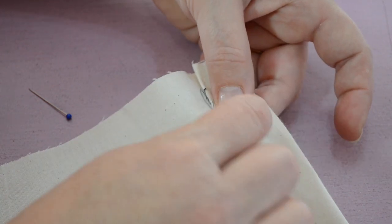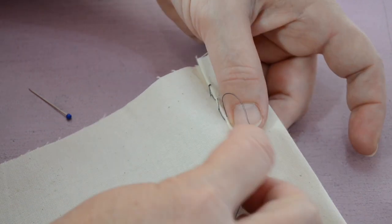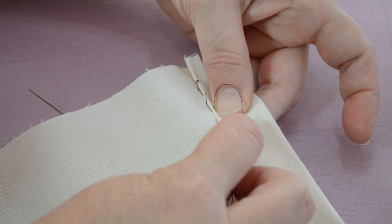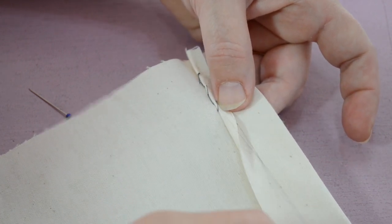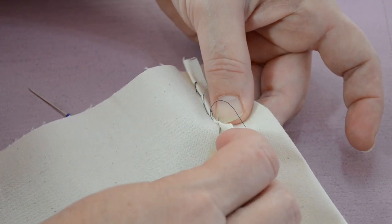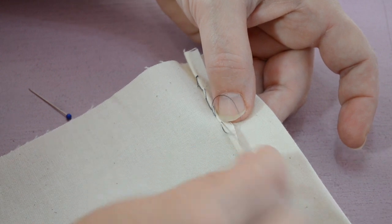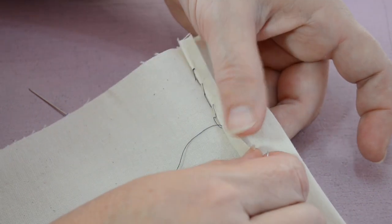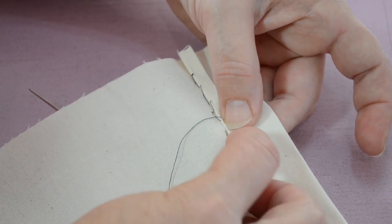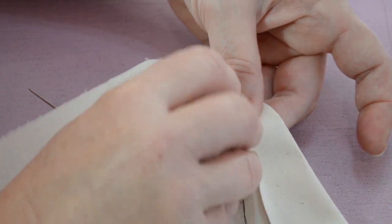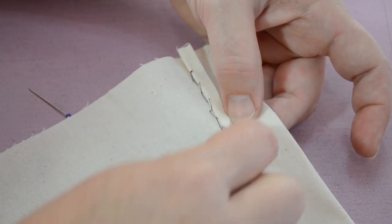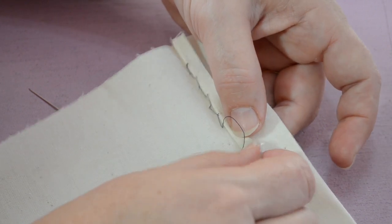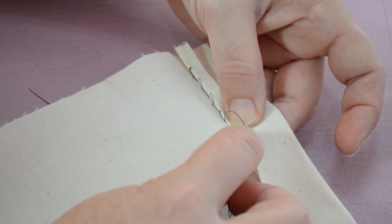And here we go. So hem and main fabric. Just a tiny little thread. Hem. And main fabric. Now you can see I'm pulling this thread through, so this is why we only use a short piece of thread rather than a long piece. And I'm just going to do a couple more and then I'm going to give you a tip.